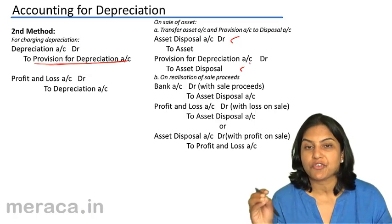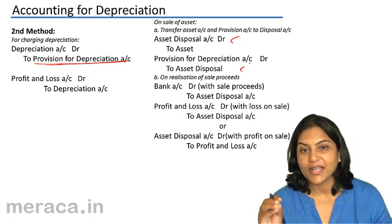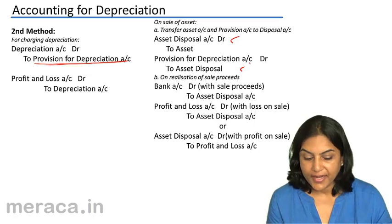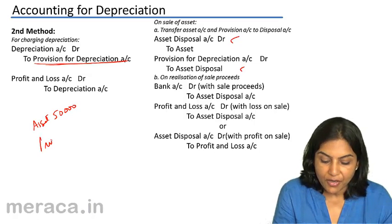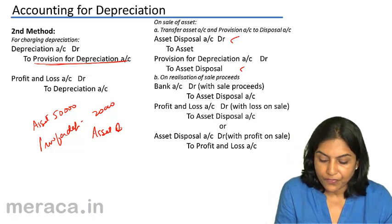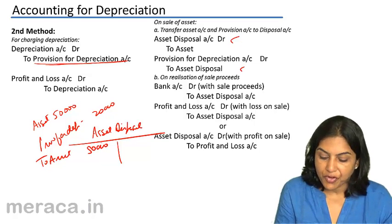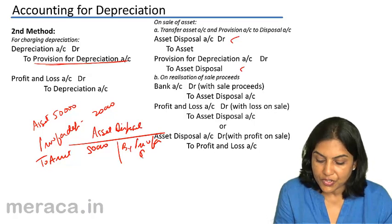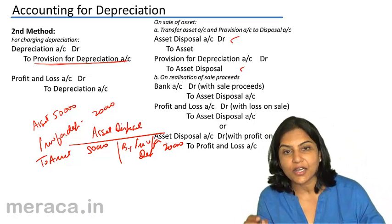If an asset was purchased for 50,000 and we have charged depreciation of 20,000, the asset account will continue to be shown at 50,000 because there is no change. But we will have a provision for depreciation account of 20,000. In the asset disposal account, we transfer the asset balance of 50,000 and the provision for depreciation of 20,000, so 30,000 is the written down value of the asset.